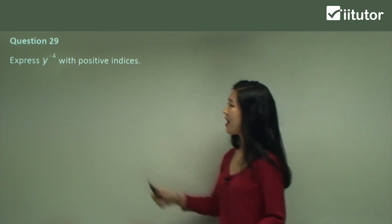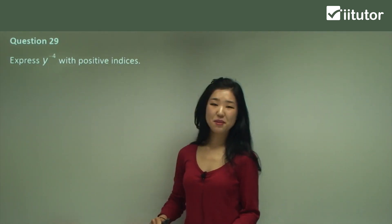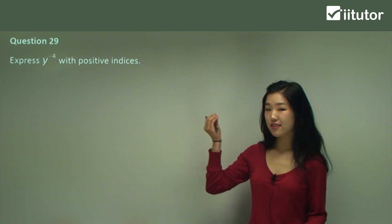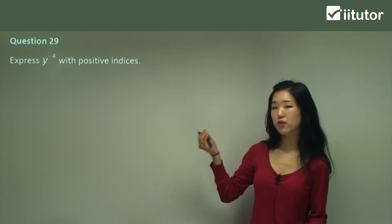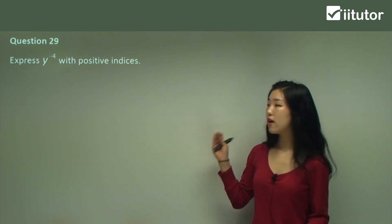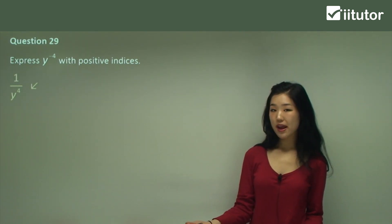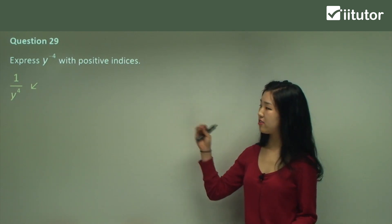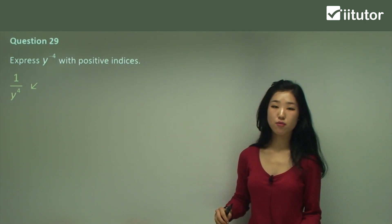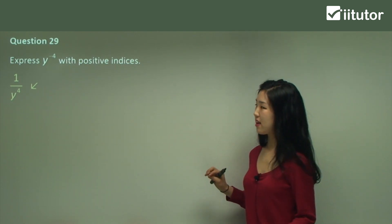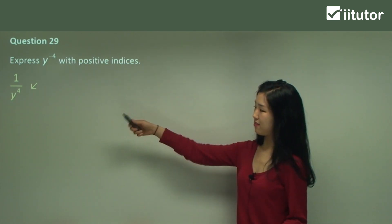Question 29. Same thing — y has the power of negative 4. So if I want the positive index, I should move it down to the denominator and change the sign to positive 4. So positive is what we have now.